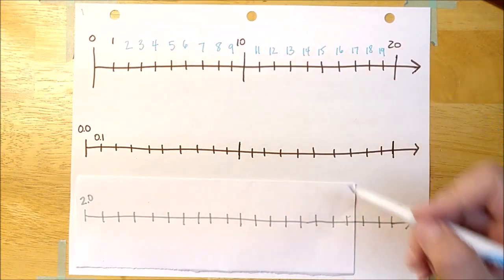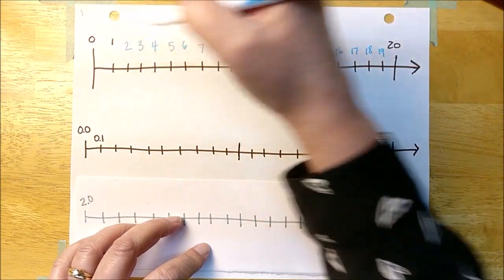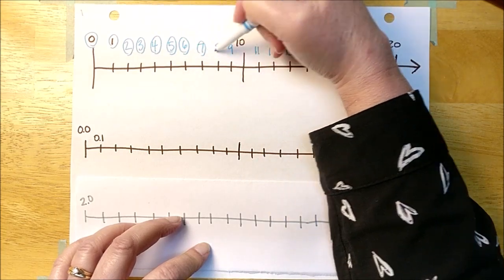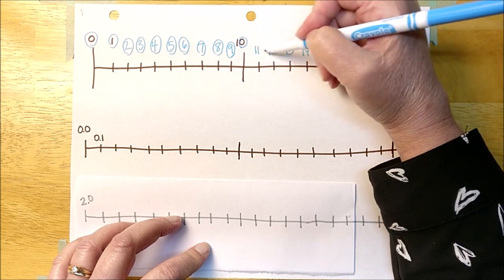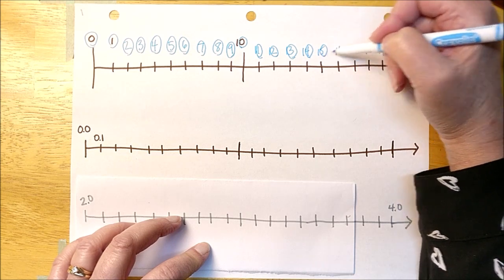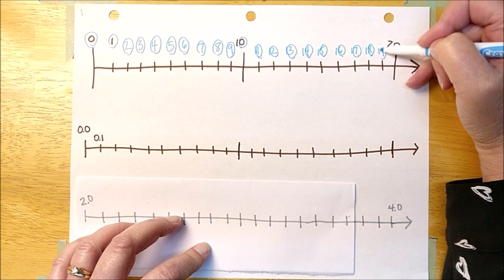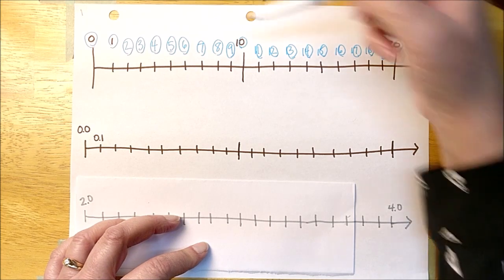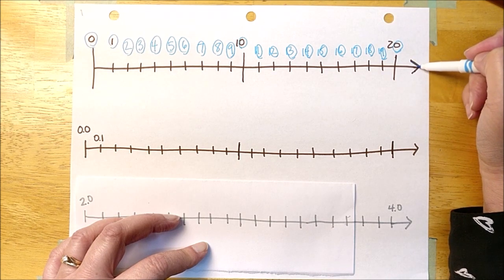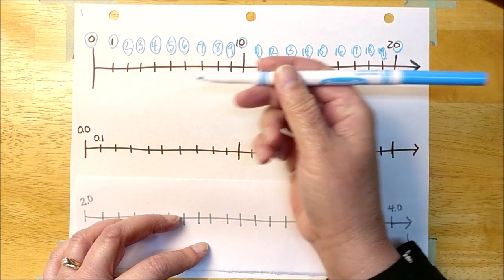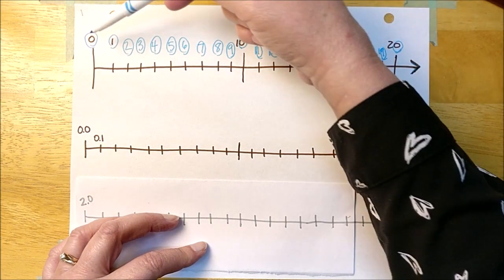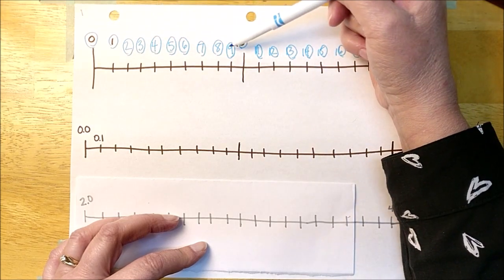I'm going to circle the number in the ones place in each one of these numbers. All of these are in the ones place. I don't know if you noticed a pattern — it went zero to nine, zero to nine. This arrow means that the number line is going to keep on going, so the next one will be twenty-one, twenty-two. Just notice that the ones digit is going from zero to nine.